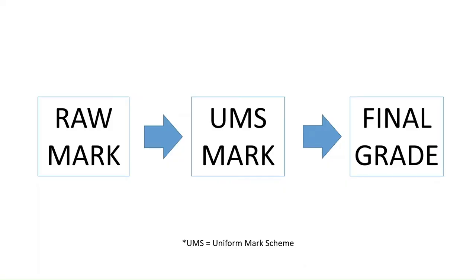Let's get into it. So on your results slip, you'll see a raw mark. This is how many marks you got out of 35 and 65 respectively. That will be converted to a UMS mark, and based upon the UMS mark, you'll be able to work out your final grade. Let's look at each of these stages.